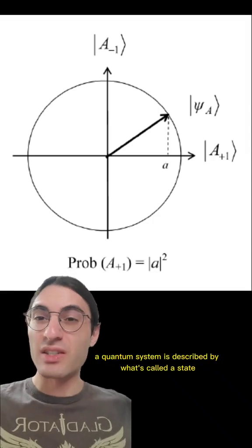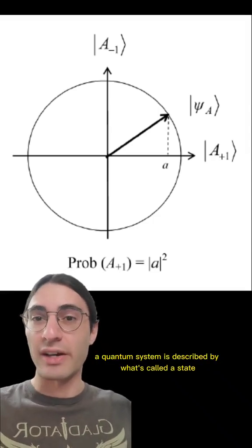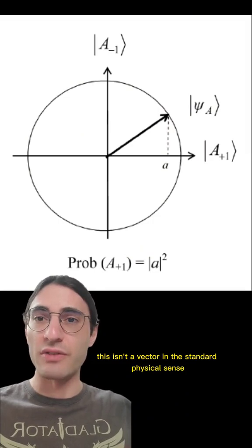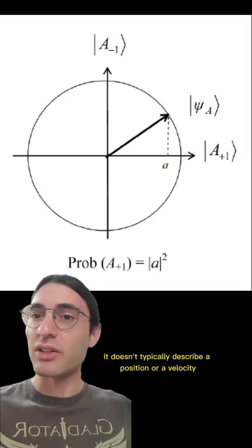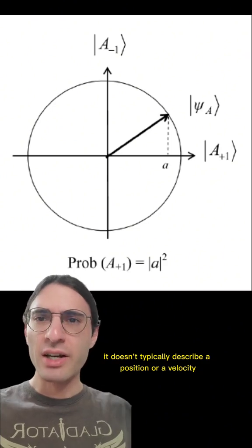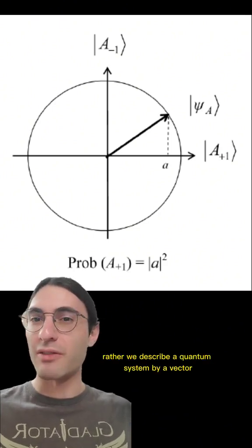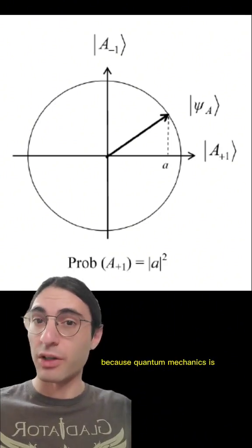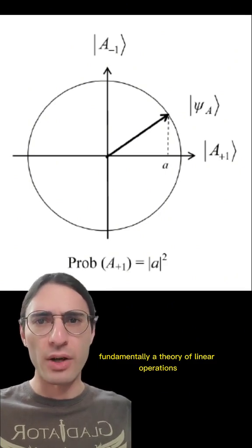A quantum system is described by what's called a state vector. This isn't a vector in the standard physical sense — it doesn't typically describe a position or a velocity. Rather, we describe a quantum system by a vector because quantum mechanics is, fundamentally, a theory of linear operations.